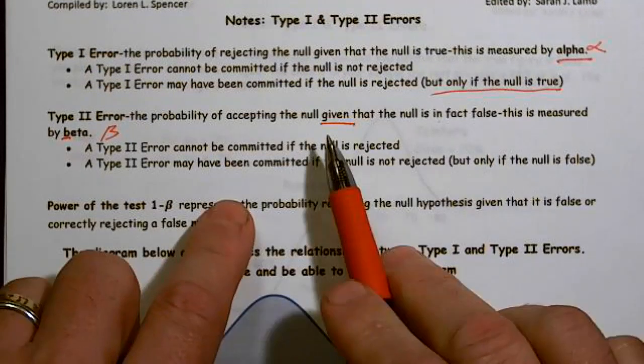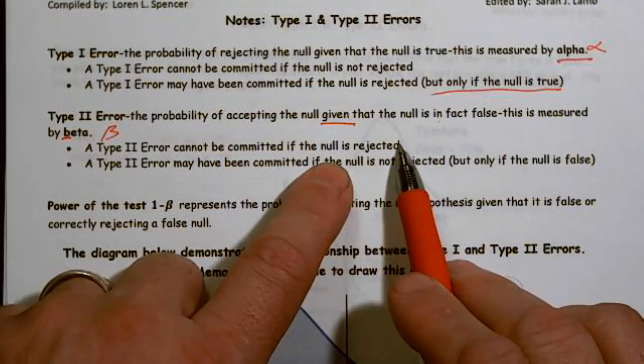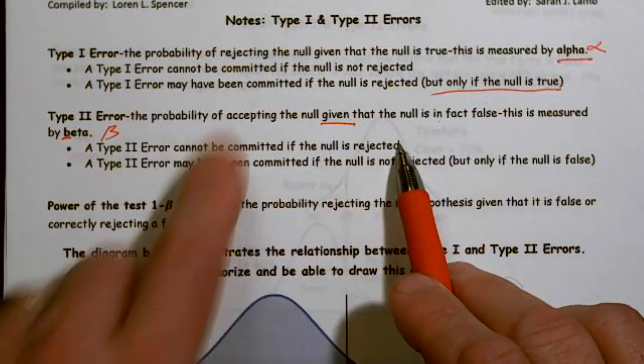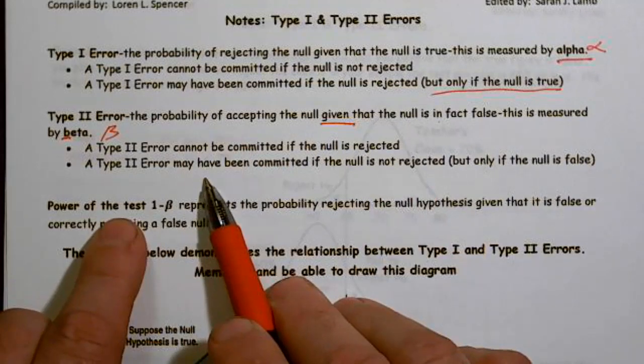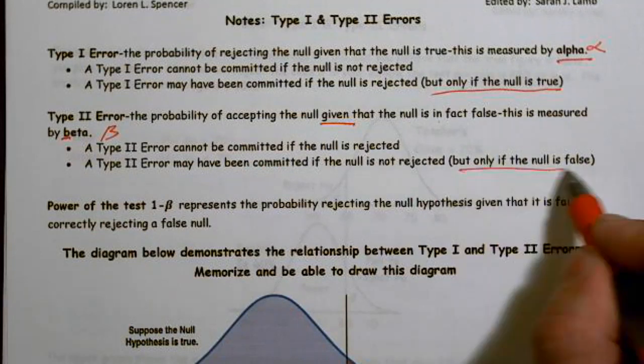A type two error cannot be committed if the null is rejected. The only type error that can be committed if the null is rejected is type one. A type two error may have been committed if the null is not rejected, but only if the null is false.